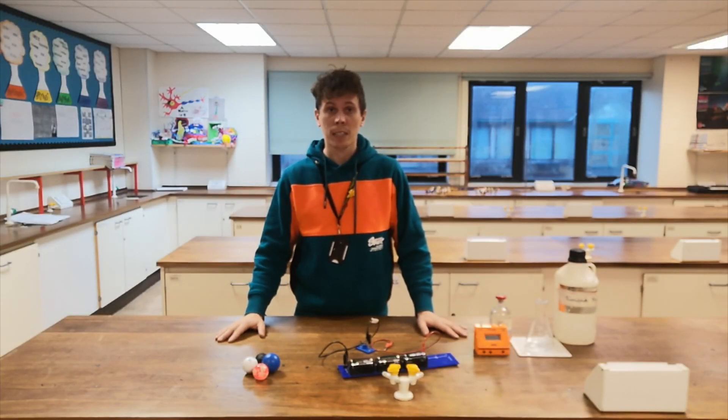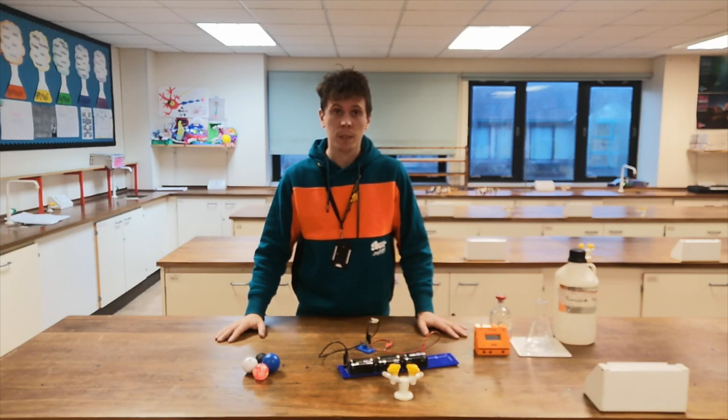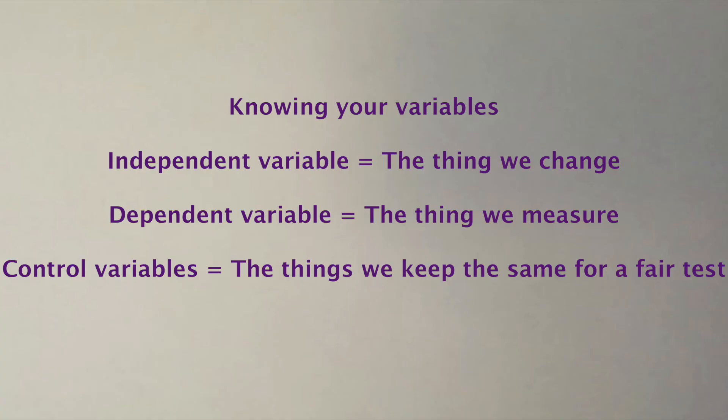In this video we're going to think about how we can identify variables in some scientific experiments. In an investigation, the independent variable is the thing that we change each time. The dependent variable is the thing that we measure and then record in our results table.